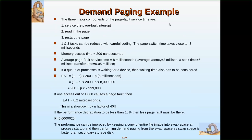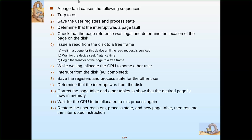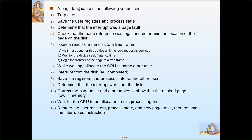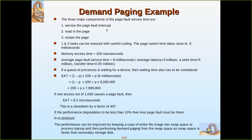The three major components of page fault service time are: servicing the page fault interrupt, reading the page into main memory, and restarting the process. Servicing and restarting can be optimized by careful coding. Reading the page depends entirely on IO. The page switch time takes close to 8 milliseconds, composed of the time for the IO transfer from secondary storage to main memory.